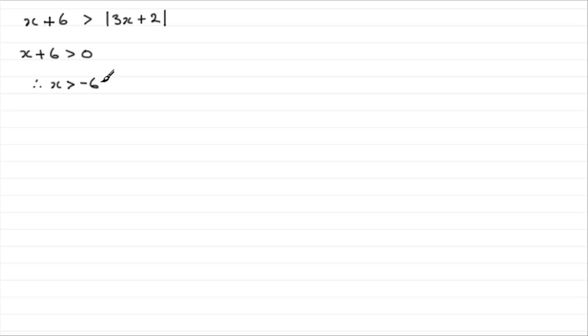Now if x is more than minus 6, we know that this will be positive, and we know that this is definitely positive for all values of x because we've got the mod sign. But we can now square both sides. So if we square both sides, we've got x plus 6 all squared is greater than 3x plus 2 all squared.